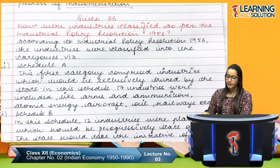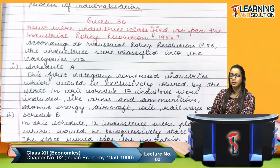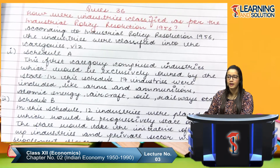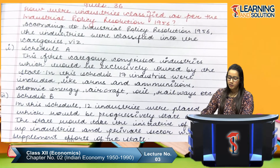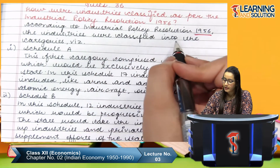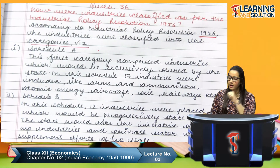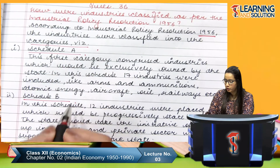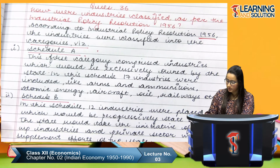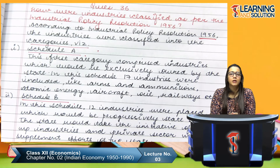What were the industries classified as per the Industrial Policy Resolution 1956? According to the IPR 1956, industries were classified into three categories: Schedule A, Schedule B, and Schedule C. The first category — Schedule A — comprised industries which would be exclusively owned by the state. In this schedule, 17 industries were included, like arms and ammunition, atomic energy, aircraft, oil, railways, and defense.